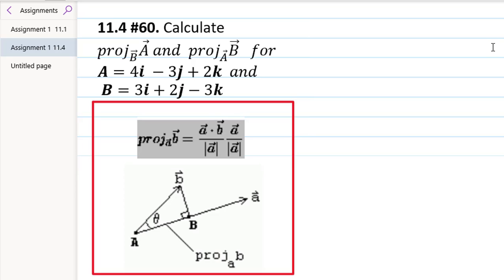So, in this case, we're asked to find both the projection of B onto A and A onto B for two non-zero vectors, A being 4, negative 3, 2, and B being 3, 2, negative 3.